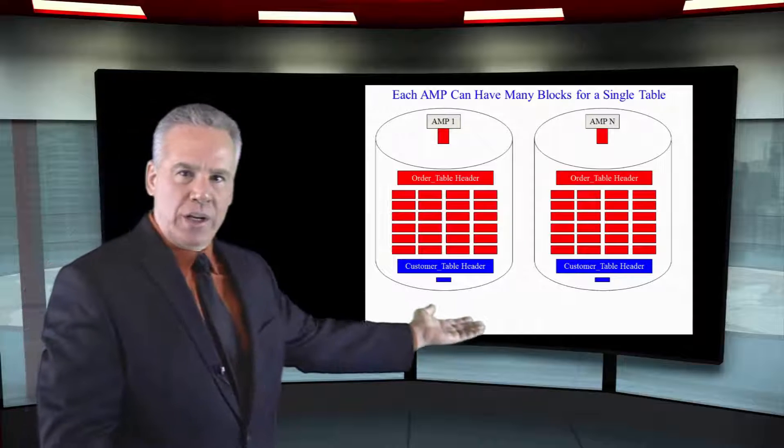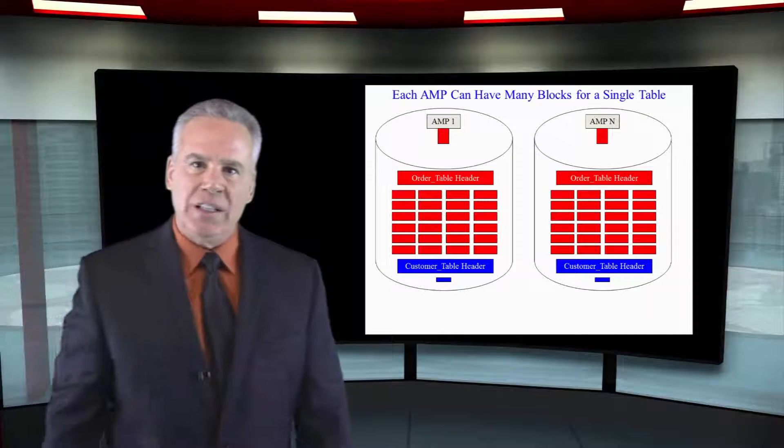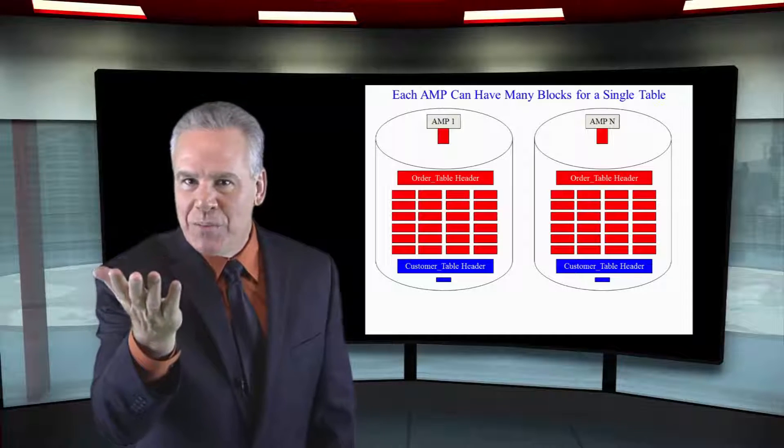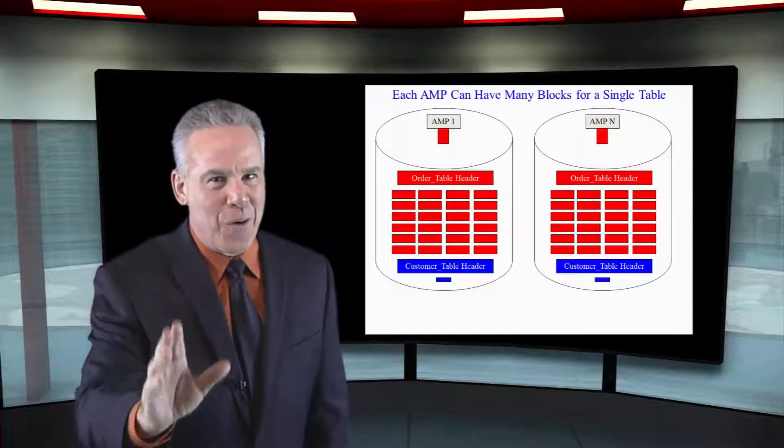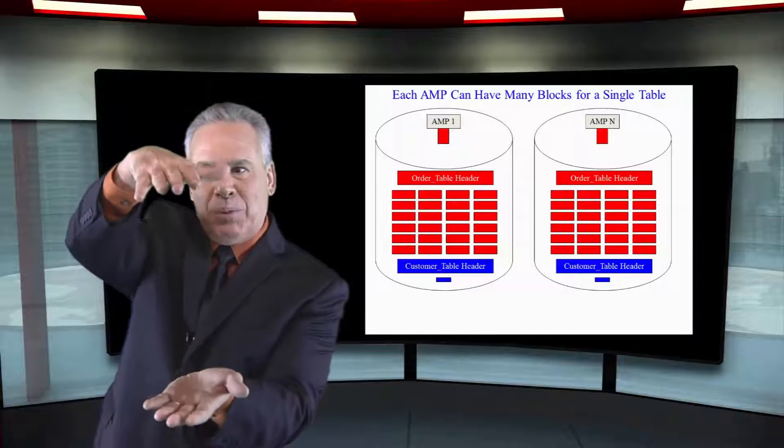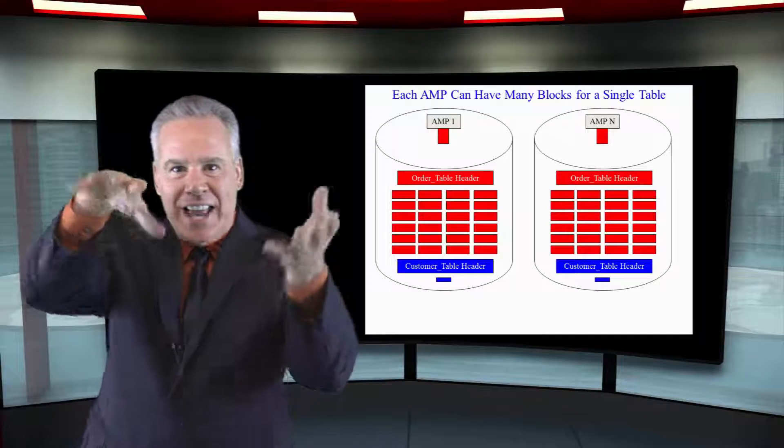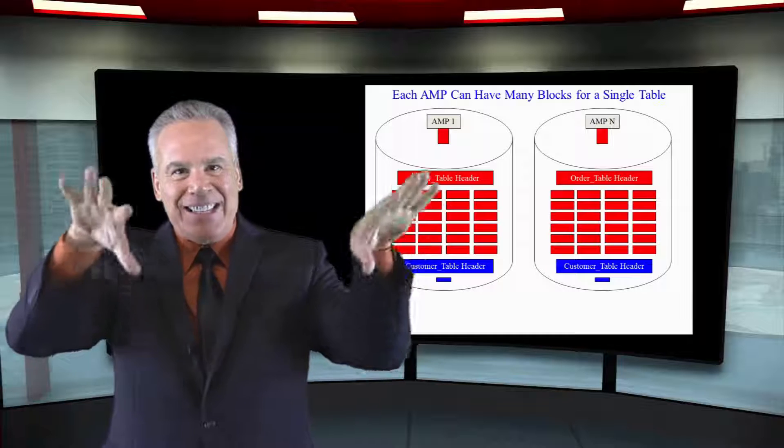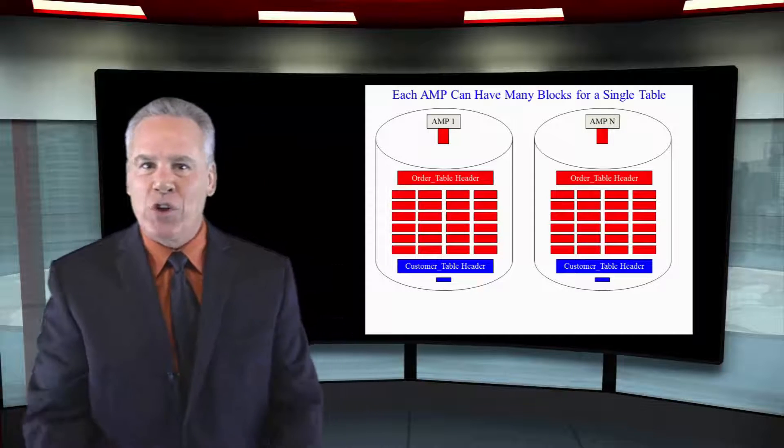Here's our customer table here at the bottom. It's just a little small table, it's got just so many customers, but they've made a lot of orders because above is the order table. Look how many times each block reached the maximum block size and split, and then grew some more, reach the maximum block size and split. And that's what you're going to see out there.